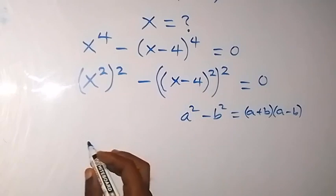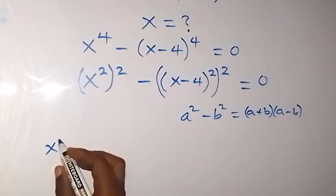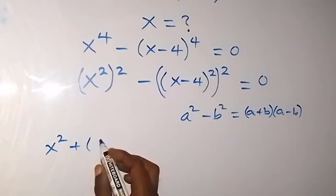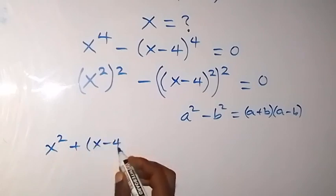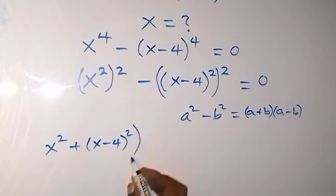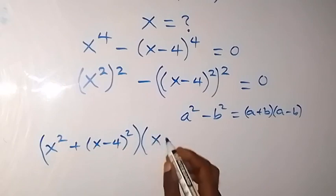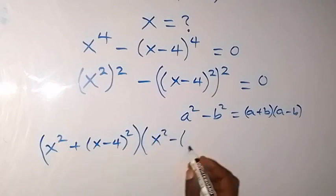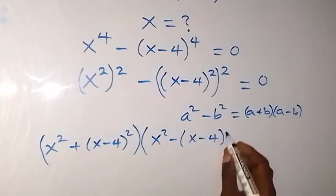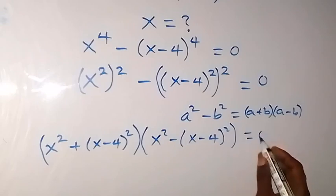So we have a plus b, that is x squared plus (x minus 4) squared, multiplied by a minus b, that is x squared minus (x minus 4) squared, equals 0.